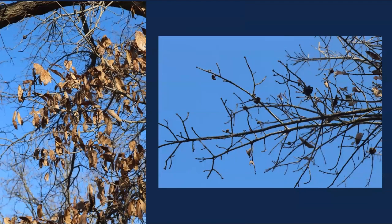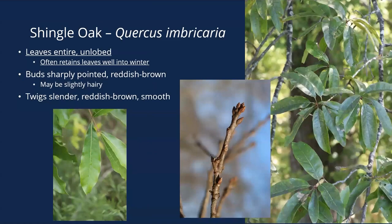You can see on the left it's holding on to some of its leaves, and on the right you can see a couple of those woody galls already growing on it. The leaves of shingle oak make it easy to identify once you figure out it's an oak — the leaves are entire and unlobed, with no teeth and no lobes. I know a lot of people who've had shingle oak for years and never realized it was an oak because the leaf doesn't look like an oak leaf. Buds are sharply pointed, reddish brown, and twigs are pretty slender.